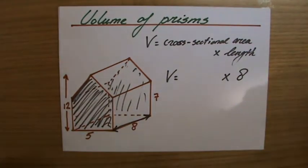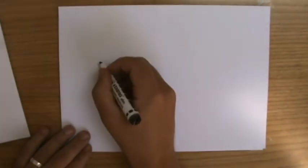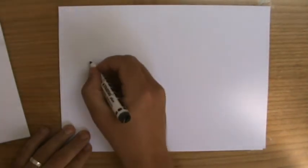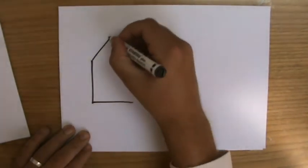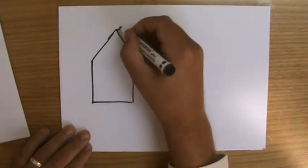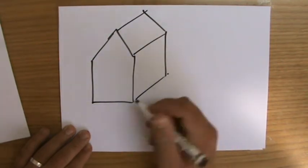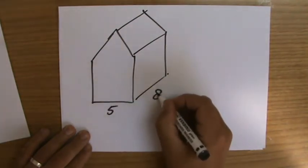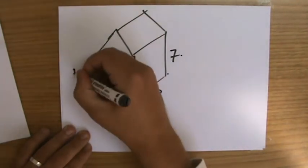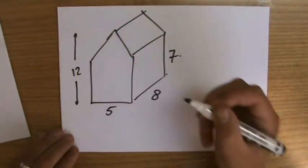I'll do that on a separate piece of paper, otherwise it gets a little bit confusing. Let me sketch the house — it's like this. I'll sketch the whole thing for you. It says 5, 8, 7, and then 12.